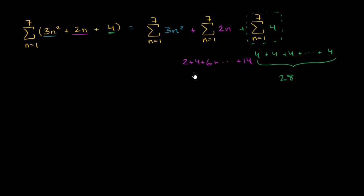You could factor out a 2, and so this is going to become 2 times 1 plus 2 plus 3 all the way to 7. And so you can rewrite this piece right over here as 2 times the sum. So we're essentially just factoring out the 2, 2 times the sum from n equals 1 to 7 of n. So this is this piece. We still have this 28 that we have to add. So we have this 28.